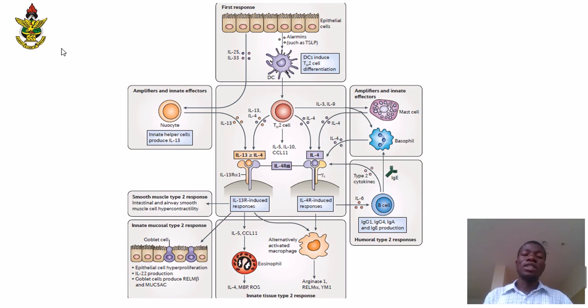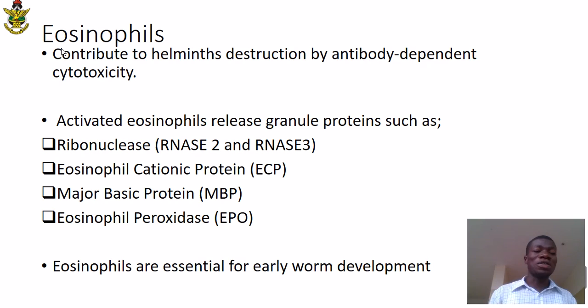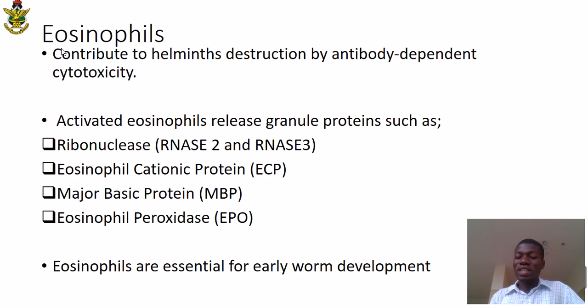The next section covers the roles of effector cells. Eosinophils have been shown to contribute to helminth destruction by antibody-dependent cellular cytotoxicity. Activated eosinophils release granule proteins such as ribonucleases 2 and 3, eosinophil cationic proteins, major basic proteins, and eosinophil peroxidase. Interestingly, eosinophils have also been shown to be essential for worm development, highlighting the regulatory roles of these cells.